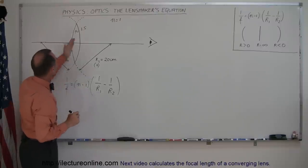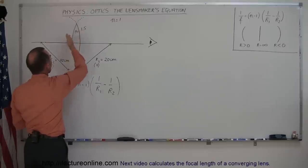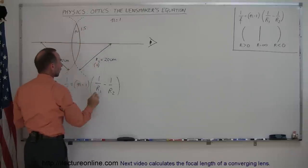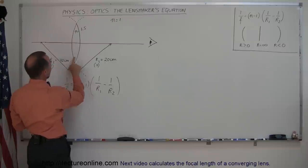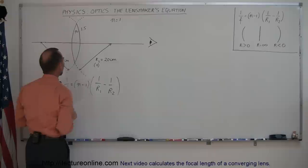And R1 is the radius of curvature of the front of the lens. And since the curvature is to the left, away from the observer, that will be a positive quantity. And you can see here that's a curvature, the center of curvature right there, so that would be a positive 20 centimeters.